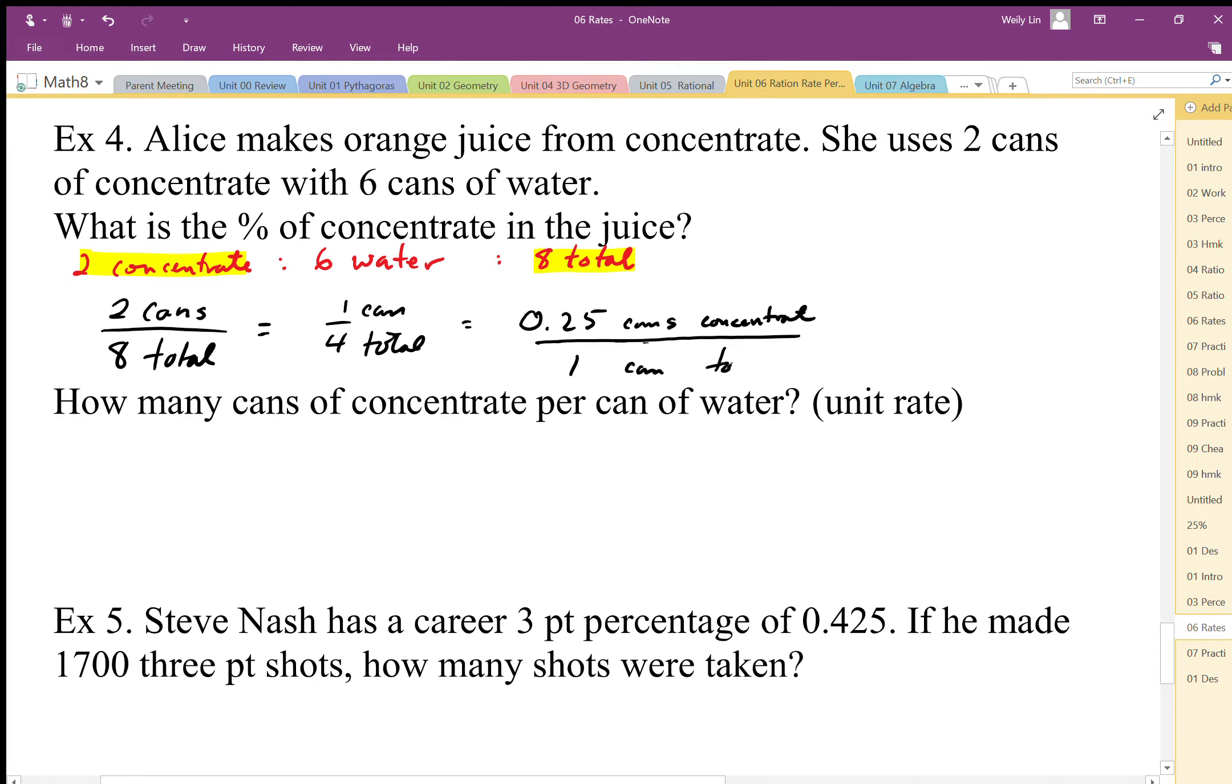That gives me 25 percent concentrate in the juice. How many cans of concentrate per can of water? What's the unit rate? I want concentrate to water, so I'm going to use these two parts.